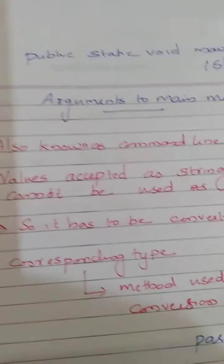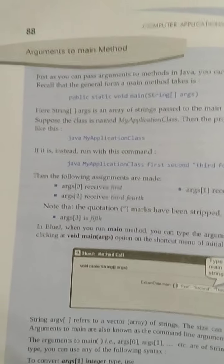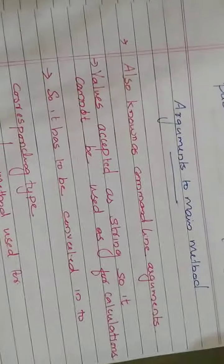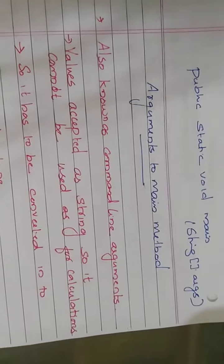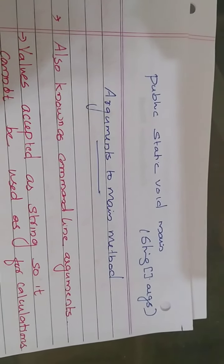Today we are going to discuss the topic: arguments to the main method. What is your main method? It is: public static void main(String[] args). Have you ever thought about what is this String[] args? It is an array — args is an array, and String is the array's data type.